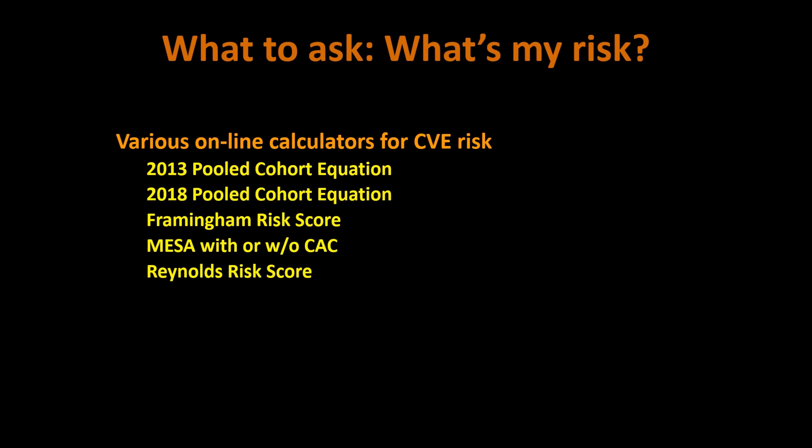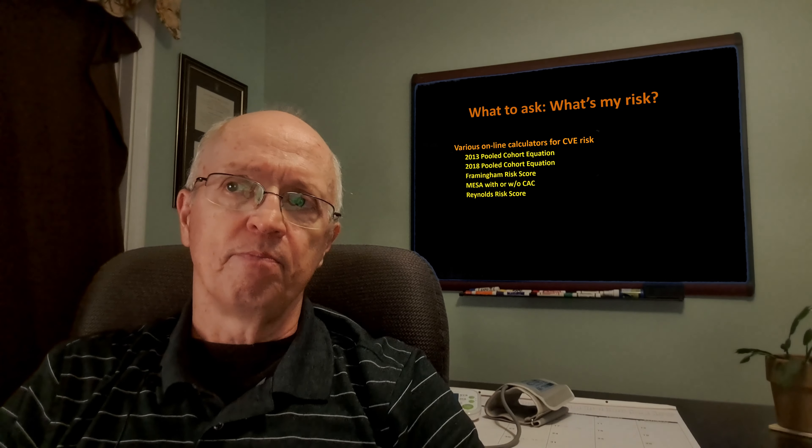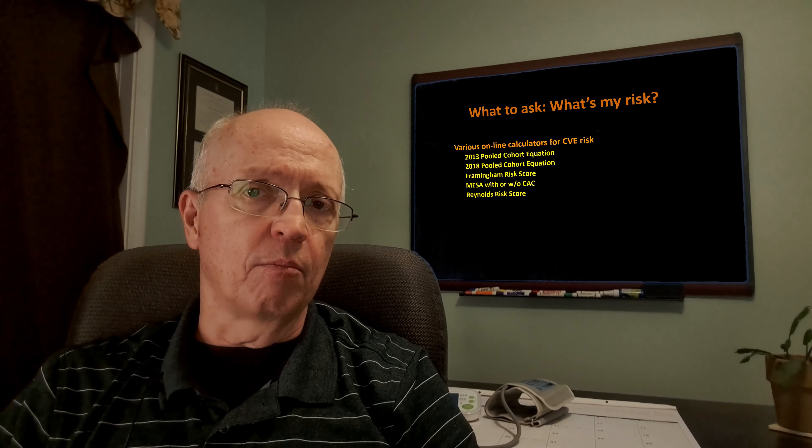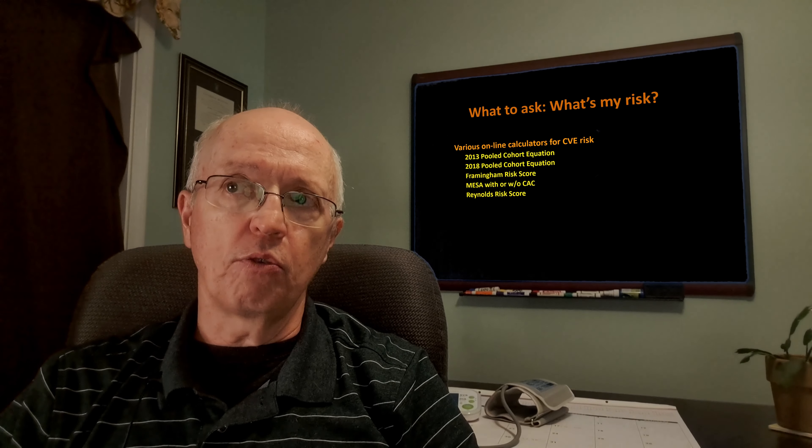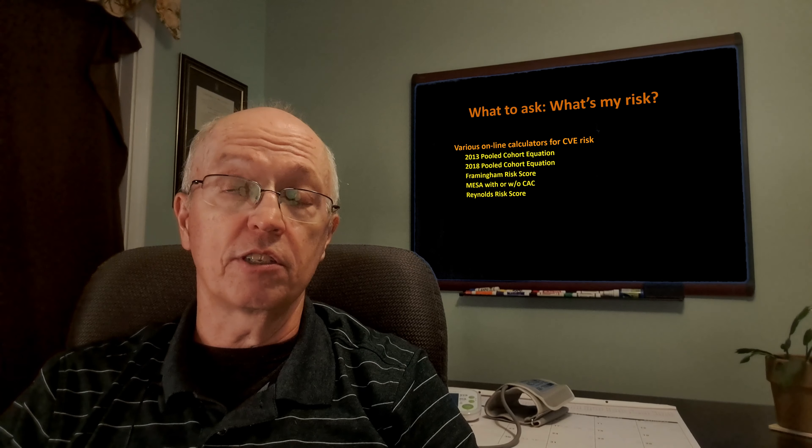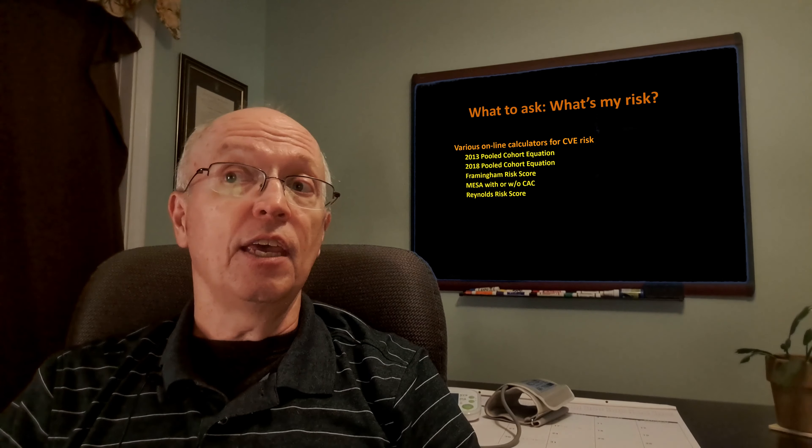For most of us, the first question to ask is: what's my risk? Why do I need this therapy? What is my heart attack risk? There are five online calculators — links in the description — and I really think you should plug in your numbers. The Reynolds Risk Score takes a high-sensitivity C-reactive protein value. The rest use standard values like total cholesterol and HDL. None ask for triglycerides, which baffles me. The MESA calculator — the Multi-Ethnic Study of Atherosclerosis — will ask for a CAC score, but you can enter zero if you don't have one.